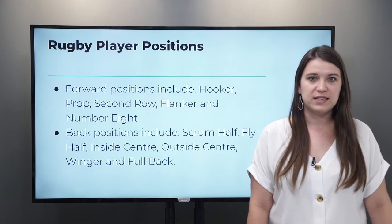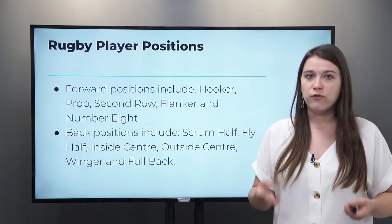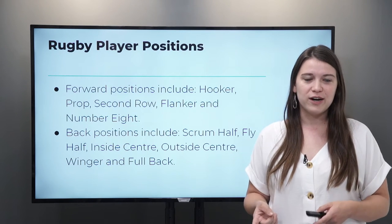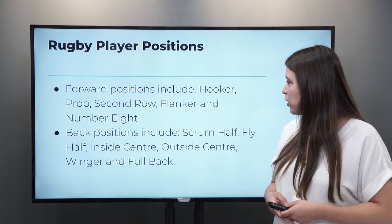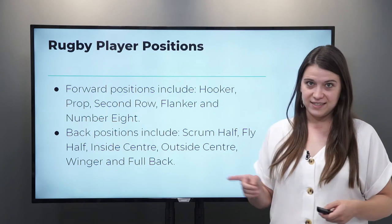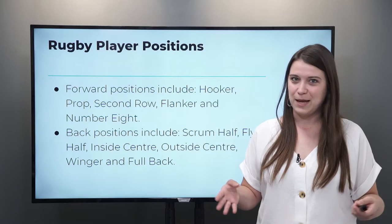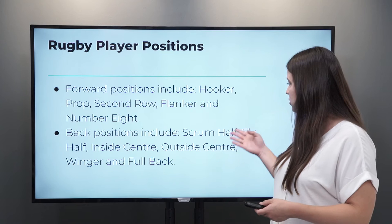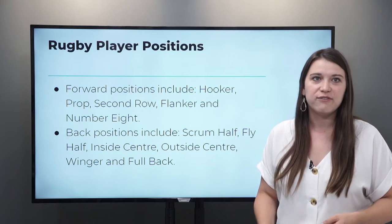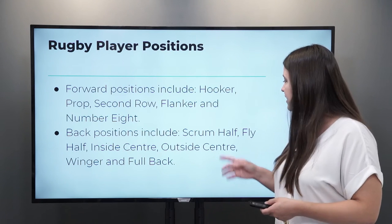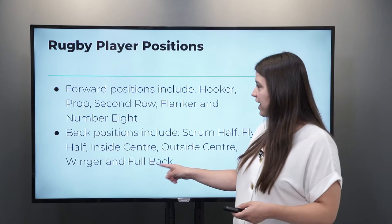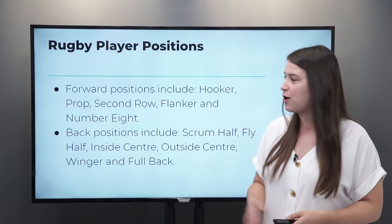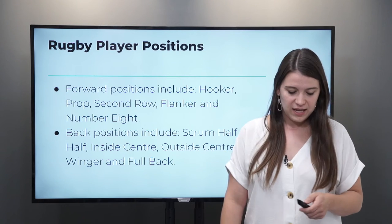What are the positions in rugby? We have the forward positions including the hooker, the prop, second row, flanker, and number eight. These are interesting names if you've never heard of them before. And then the back positions include the scrum half, the fly half, the inside center, the outside center, the winger, and the fullback. You probably won't remember all of these, but these are the main positions in rugby.